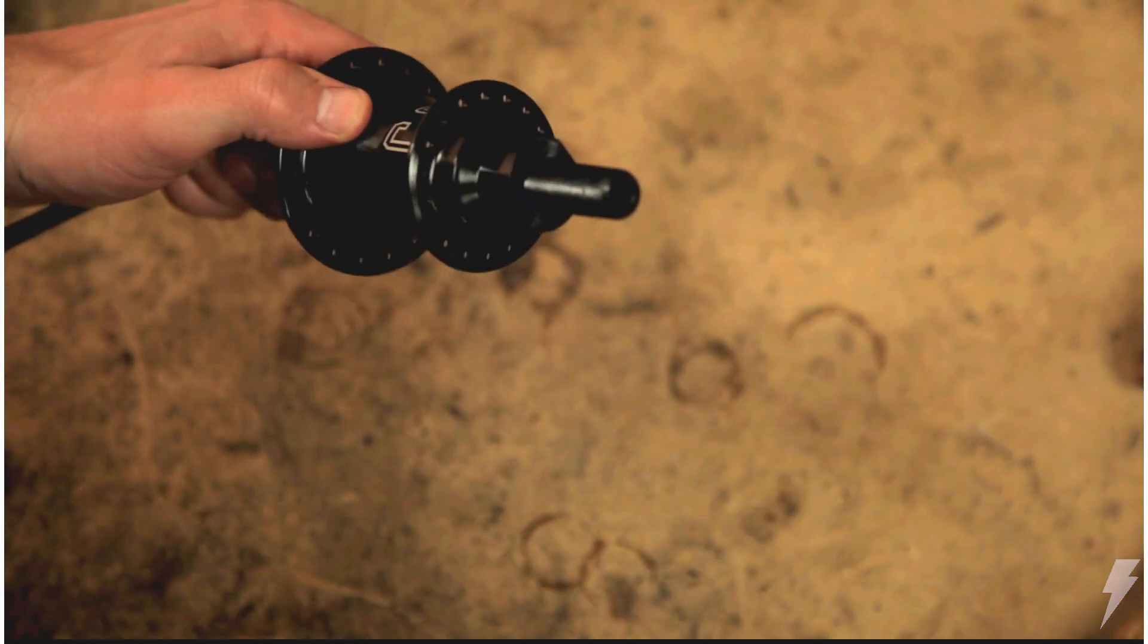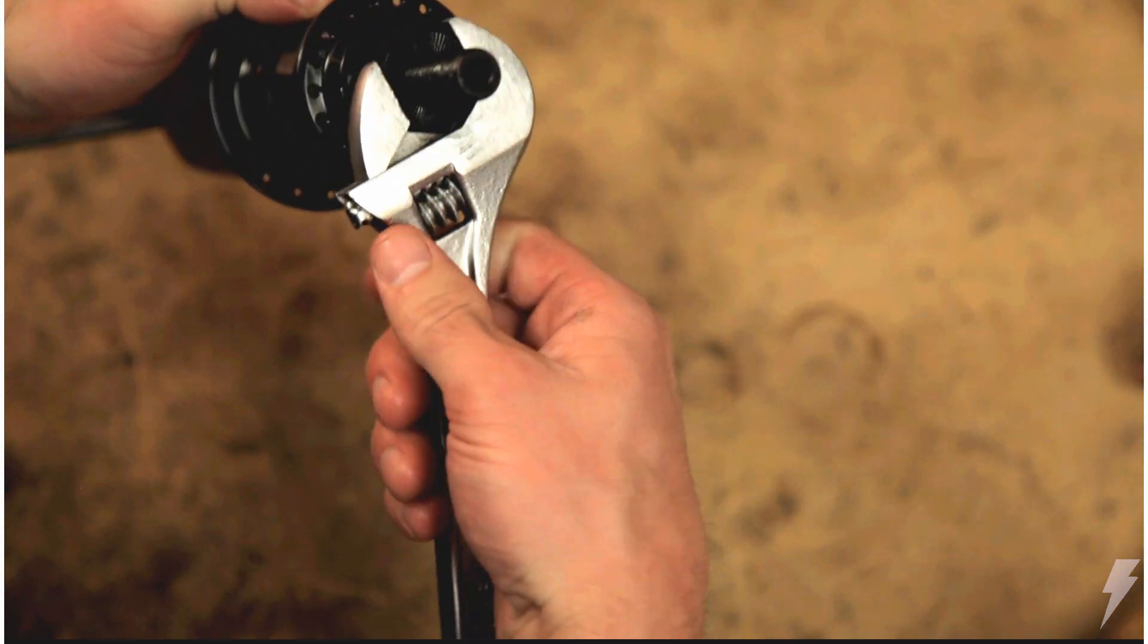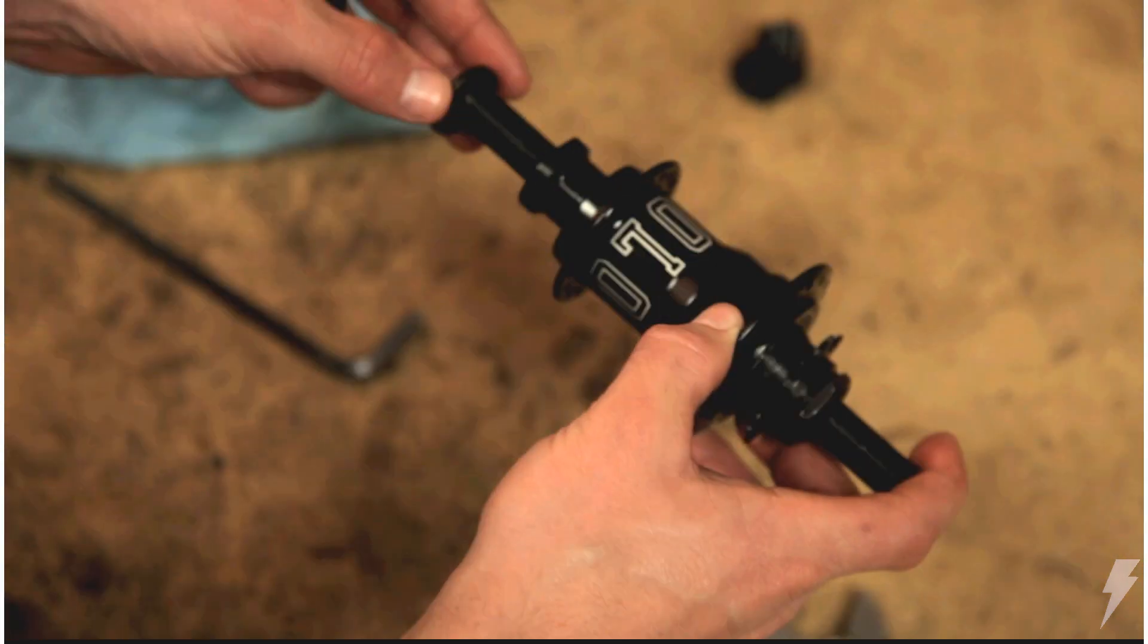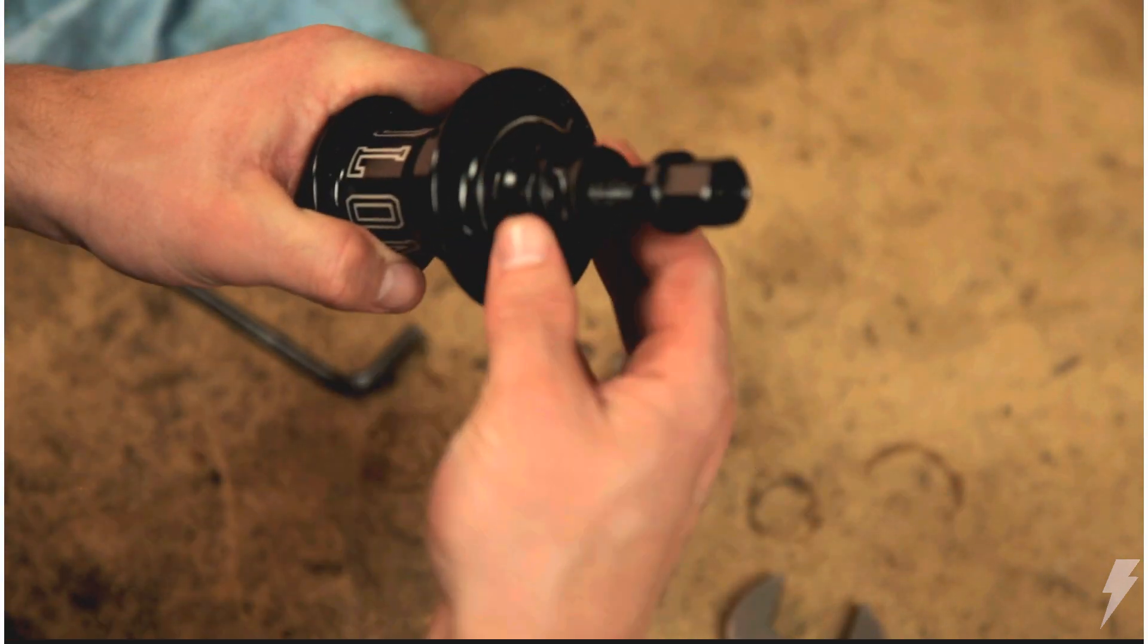Reinstall the drive side cone nut with the knurled end facing out. Double check the non-drive side cone nut, making sure it's tight. Then tighten the drive side cone nut. Finally reinstall the axle nuts and check for proper function.